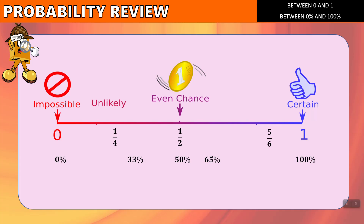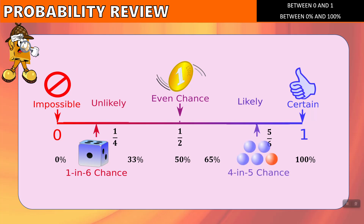Between impossible and even chance, something is unlikely to happen, like a 1 in 6 chance of throwing a die. And between even chance and certainty, we say something is likely — for example, a 4 in 5 chance.